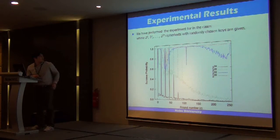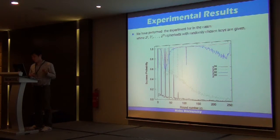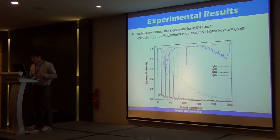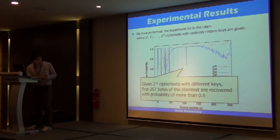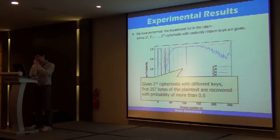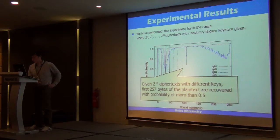In our experiment, in the case where 2^35 ciphertexts are given, this graph shows the relationship between byte position and recovery probability, where the bound number means the position of the keystream byte. Given 2^32 ciphertexts with different keys, the first 257 bytes of plaintext can be recovered with probability of 0.5, and most bytes can be recovered with probability of 0.8.